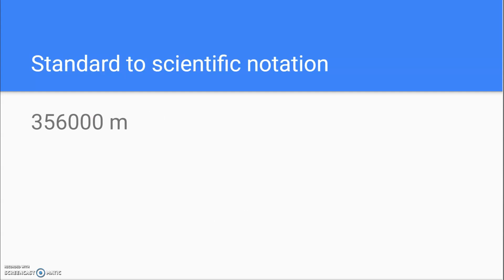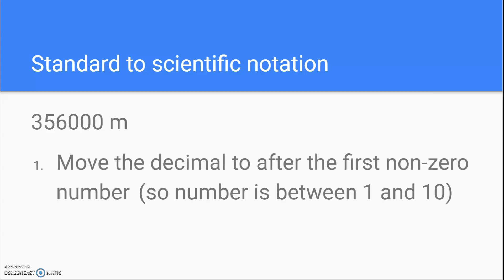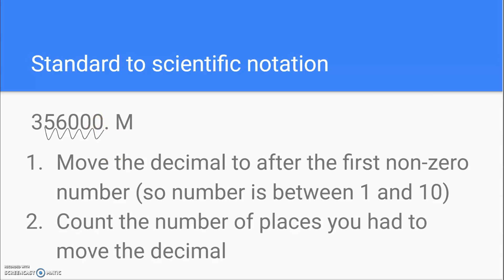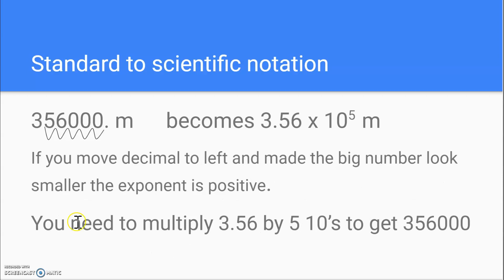So how do I change a number with lots of zeros to something in scientific notation? There are a few steps we follow. First, we move the decimal to after the first non-zero number so that the number is going to be somewhere between 1 and 10. That number before didn't appear to have a decimal, but it really does — the decimal is at the end. So I need to move it so I have a number between 1 and 10. I move the decimal and count how many places I move it to get it between the 3 and the 5 — that's 1, 2, 3, 4, 5 places. So that number becomes 3.56, but we have to account for those 5 places, so it becomes 3.56 times 10 to the 5th meters.